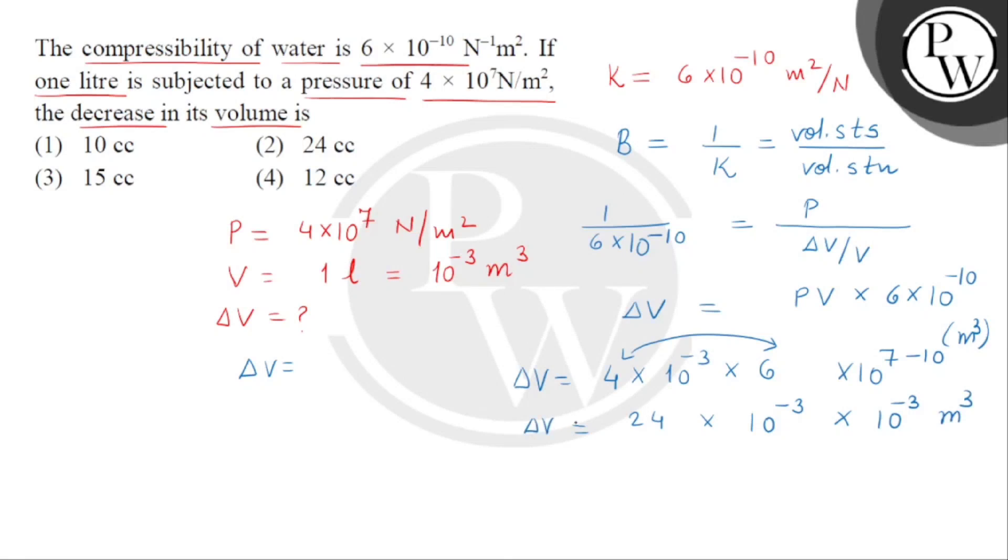Looking at the options, all are given in cubic centimeters. As we know, 1 centimeter is 10^-2 meter, so 1 cubic centimeter will be 10^-6 cubic meter. Therefore, we can write this as 24 cubic centimeters, which is 24 cc.